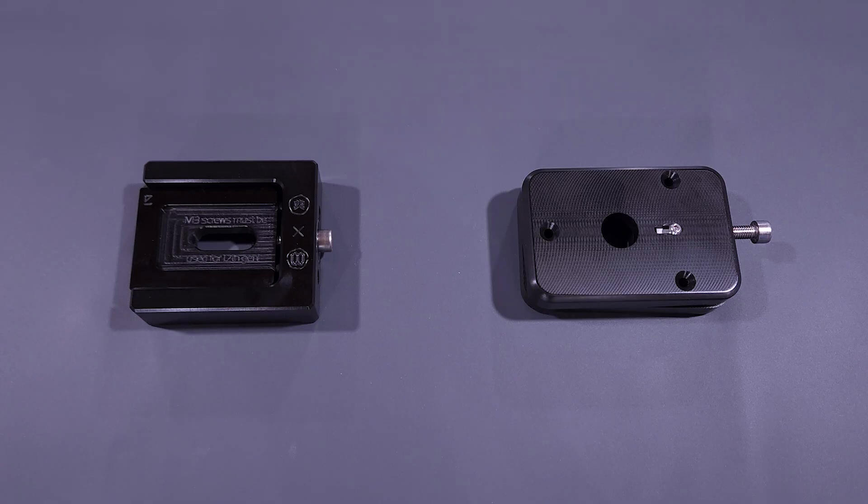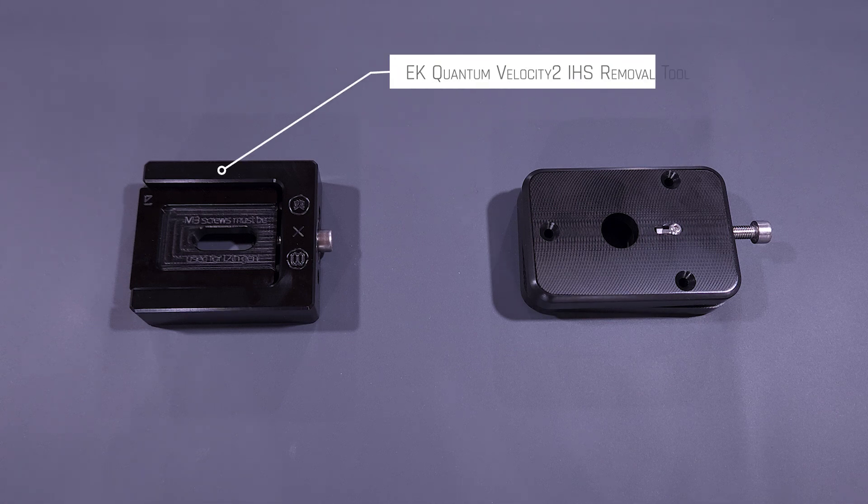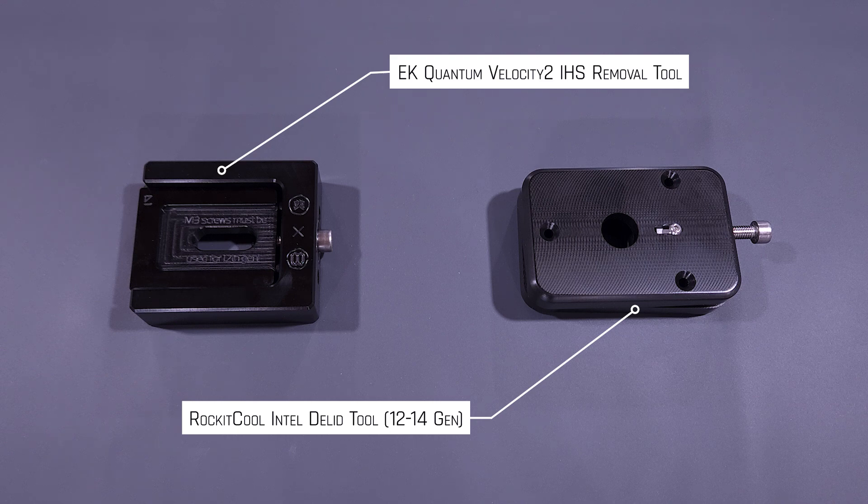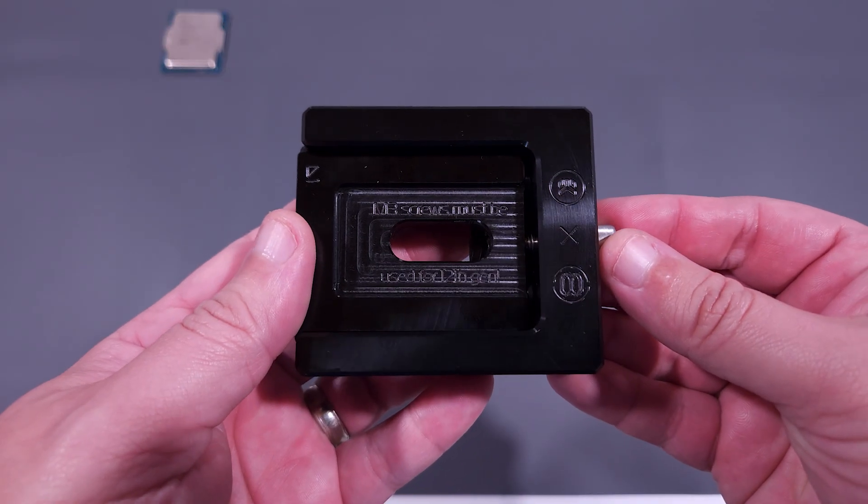The delid tools I use for Intel 13th and 14th Gen CPUs are the EK Quantum Velocity II IHS removal tool and the RocketCool Intel delid tool. Let me show a quick demonstration for how these tools work. Up first is the EK IHS removal tool.